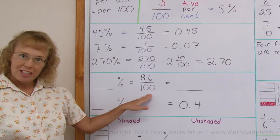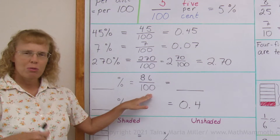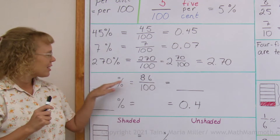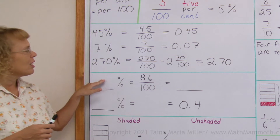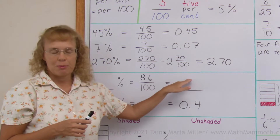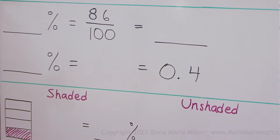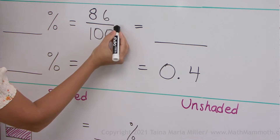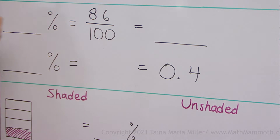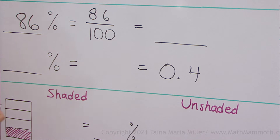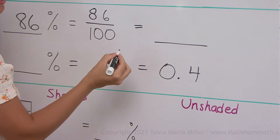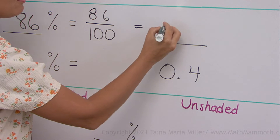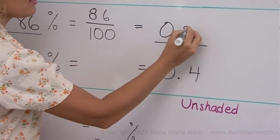Over here I have a fraction. I want you to think and write it as a percent and as a decimal. 86 hundredths, or 86 per cent — 86 percent. 86 hundredths as a decimal — you've already learned that — it is 0.86.